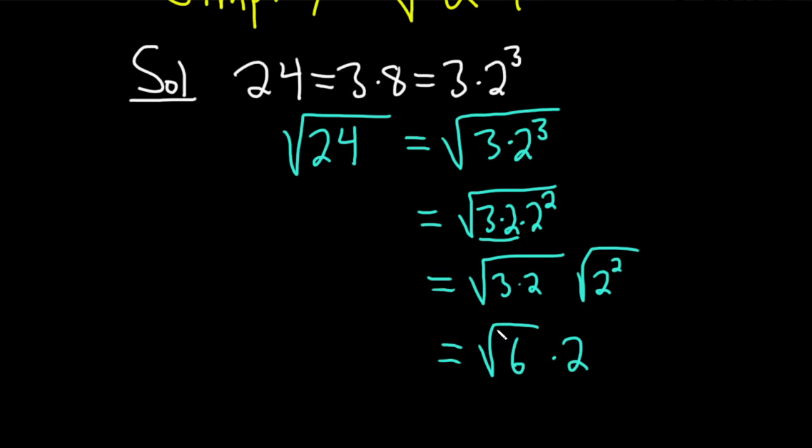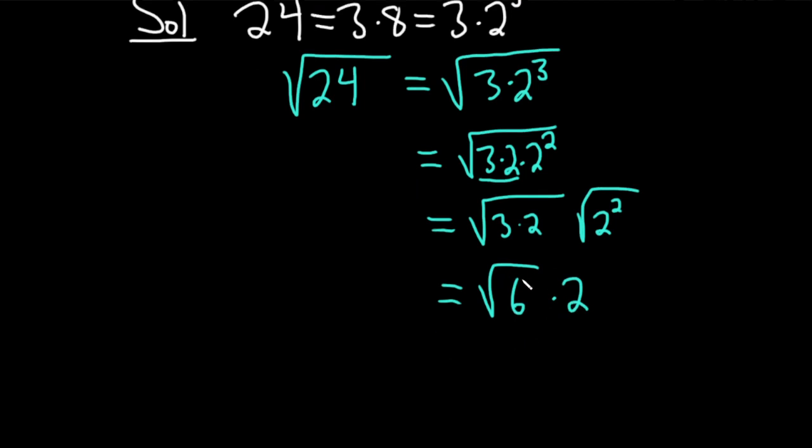But you don't want to leave the number in the back like that because people might think it's inside the square root. So you want to put it in the front like this, 2 square root 6.